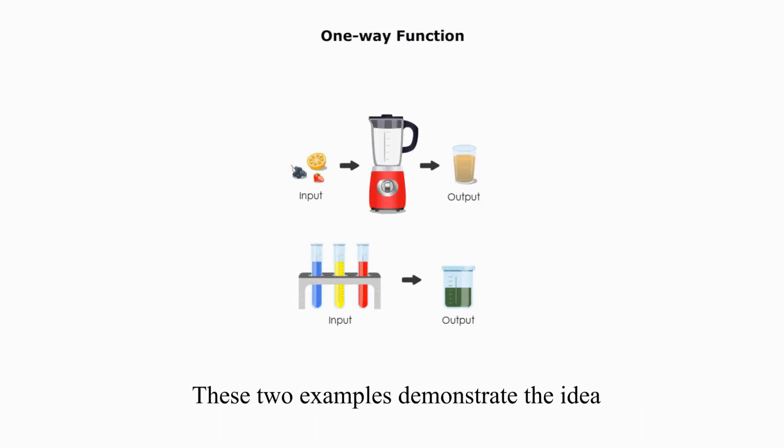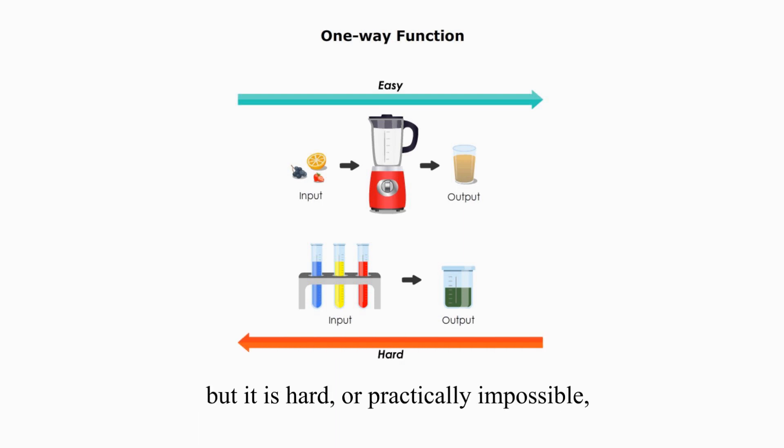These two examples demonstrate the idea how a one-way function works. It's easy to get an output given an input, but it's hard or practically impossible to know the input from the output.